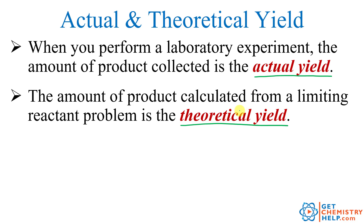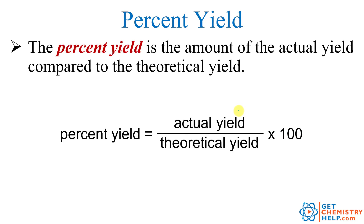We can use these two pieces of information to calculate what's known as the percent yield. The percent yield is just a ratio of the actual yield divided by the theoretical yield, then times 100 to turn it into a percentage. So it's the amount you actually made divided by the amount you calculated you should have made, times 100.